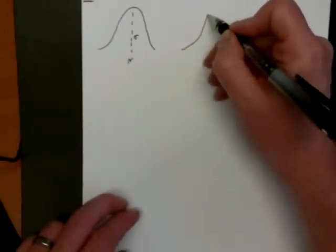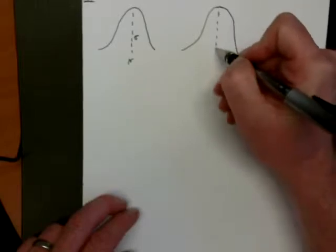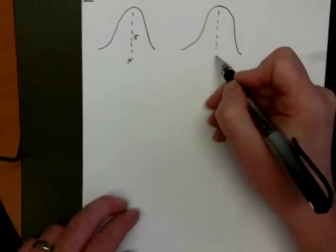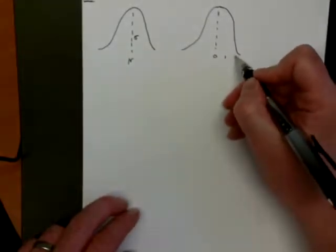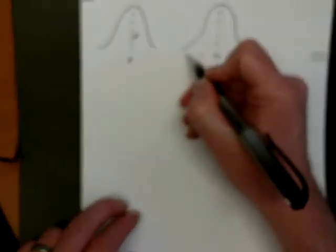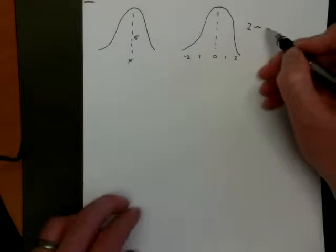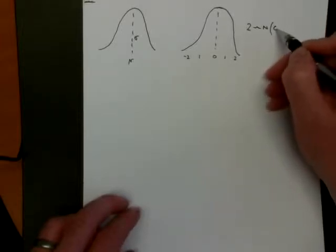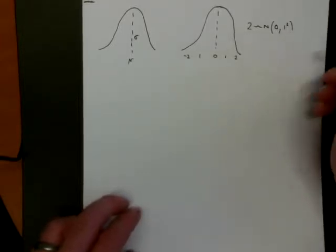In a standardised normal distribution, the mean is taken to be zero, and the values are equal to standard deviations for other distributions. This particular distribution is z ~ Normal, mean is zero, standard deviation is one.